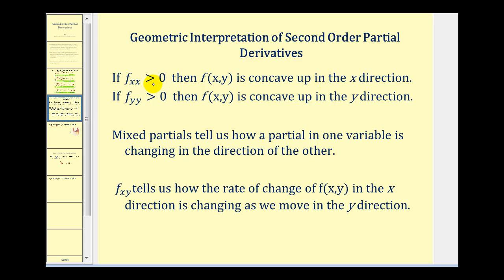If f_xx is negative, the function will be concave down. If f_yy is positive, then f(x, y) is concave up in the y direction, and if it's negative, it'll be concave down. In general, mixed partials tell us how a partial in one variable is changing in the direction of the other. So f_xy tells us how the rate of change of f(x, y) in the x direction is changing as we move in the y direction.